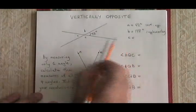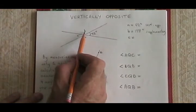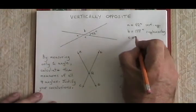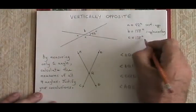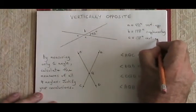Angle C is vertically opposite to angle B. So angle C must also be 138 degrees. And we got that by using the vertically opposite rule.